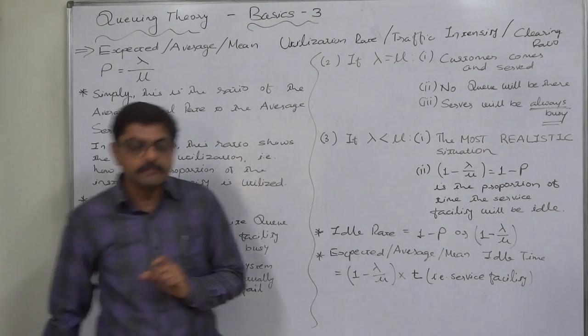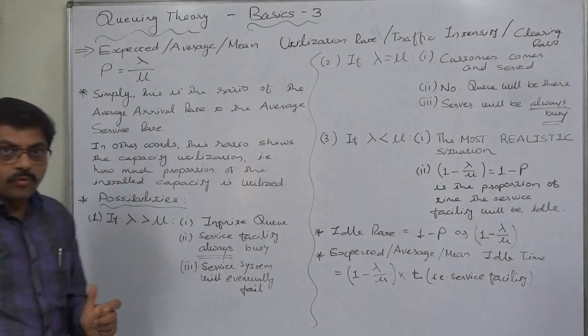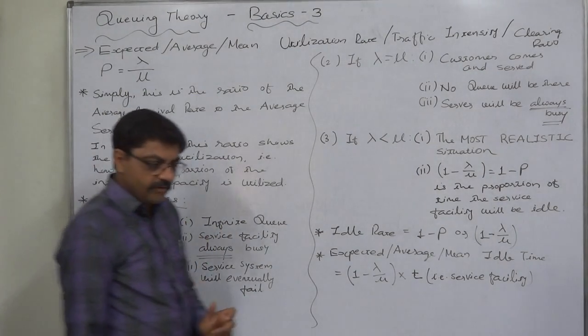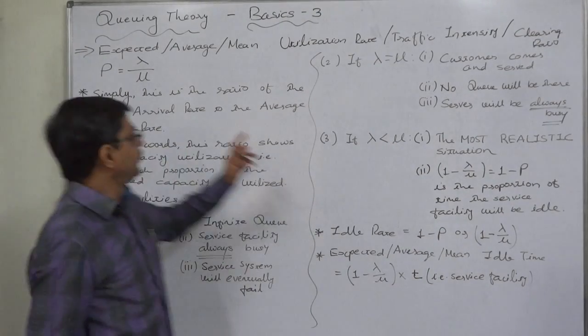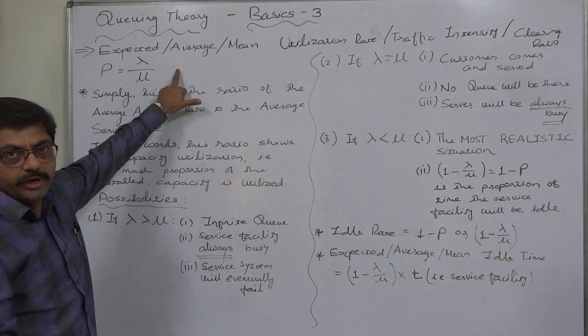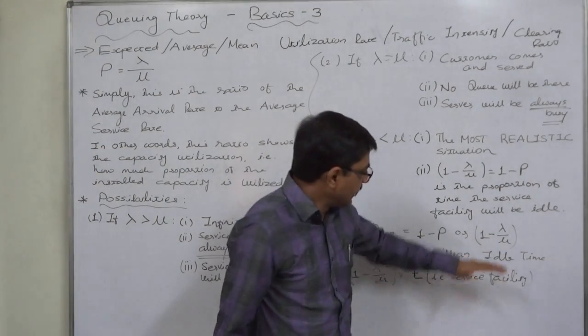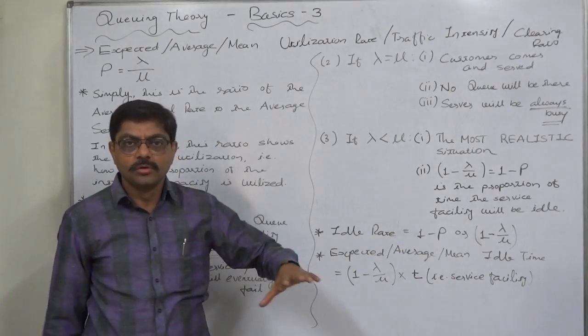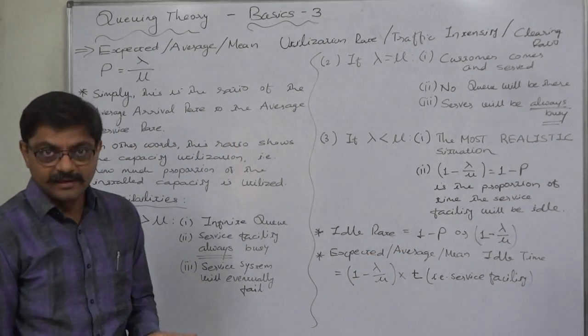Again let us take our example. 12 customers arrive in one hour and we are capable to serve 15 customers. So 12 against 15 is 0.8. 1 minus 0.8, that means 0.2 is the idle ratio. Or 20% of installed capacity remains idle in our example.